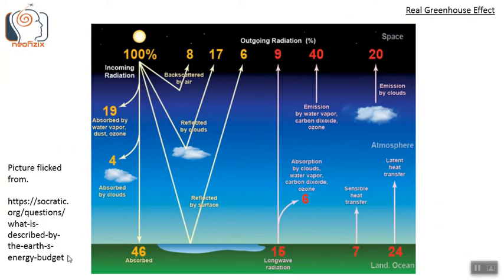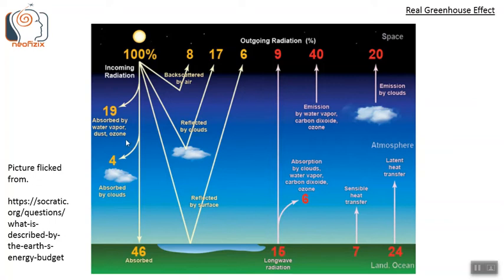This picture shows the distribution of shortwave radiation in different portions of the atmosphere, taken from Socratic.org. From the energy flux measurements on Earth, we find that the atmosphere also blocks some incoming solar radiation. The numbers 19 and 4 — total 23% — is absorbed by the atmosphere. And the numbers 8, 17 and 6 — total 31% — is reflected back to space. Hence, the portion that really drives the temperature changes on the surface is this 46% absorbed by the surface, not 69 or 70%.